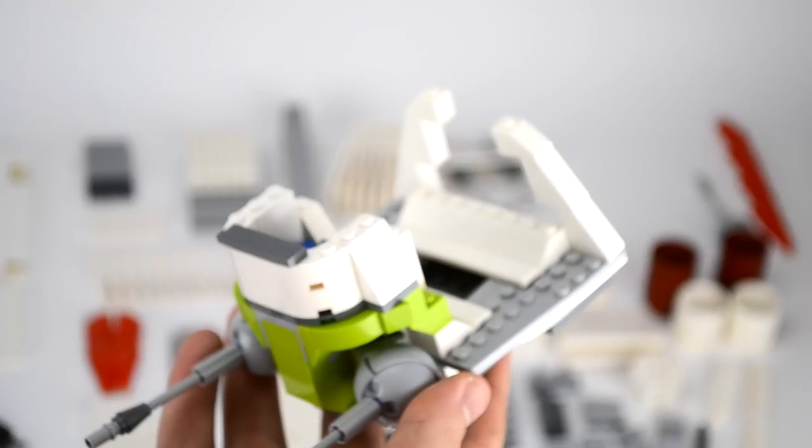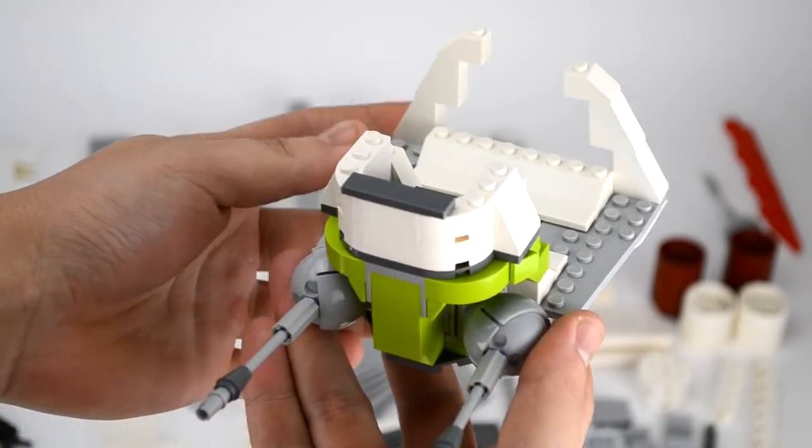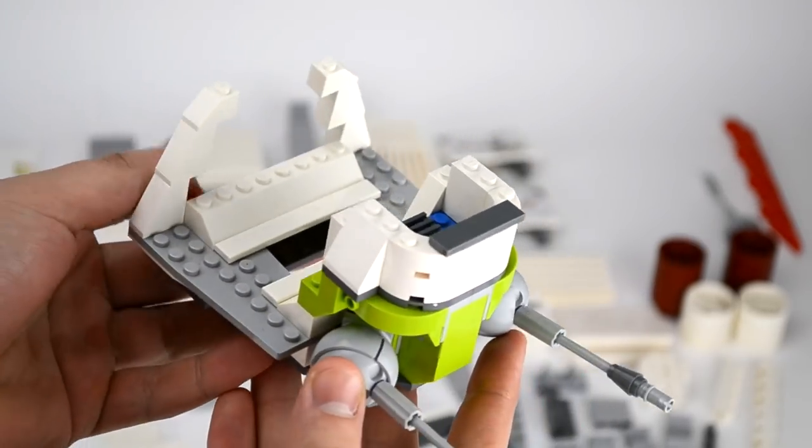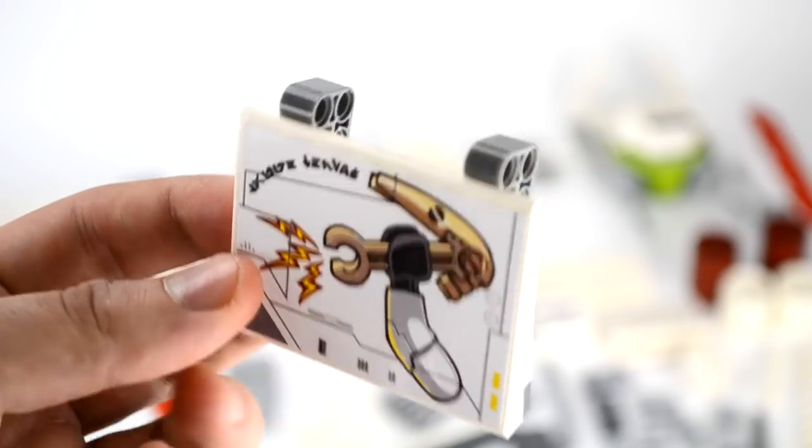Now when you take the gunship apart you can keep this front section together as it is identical to the front of the Republic dropship and we can keep the side panels together as well.